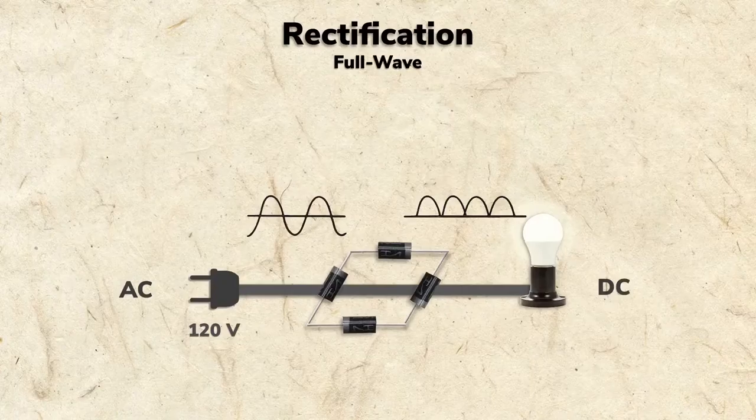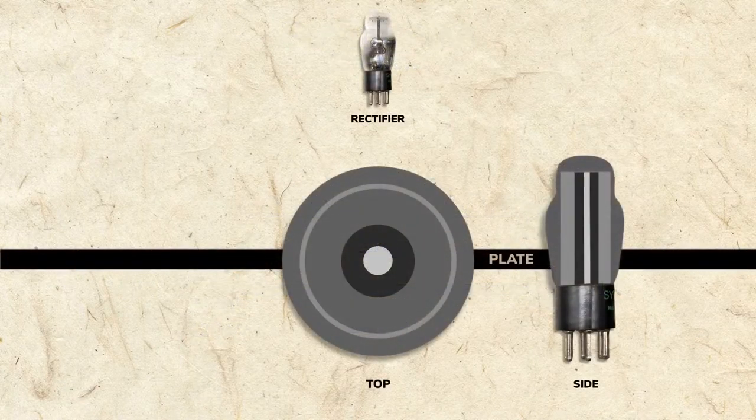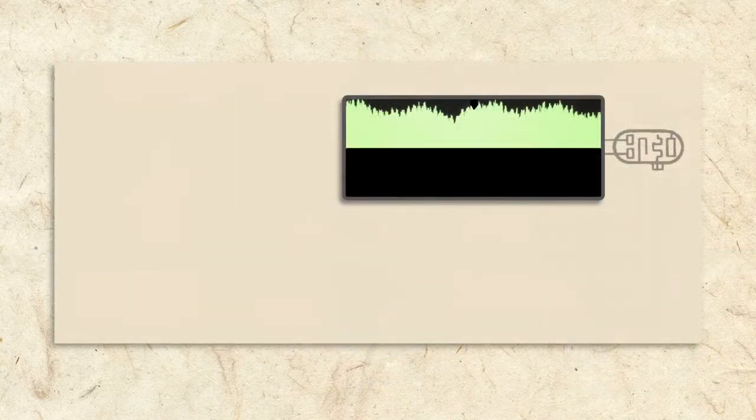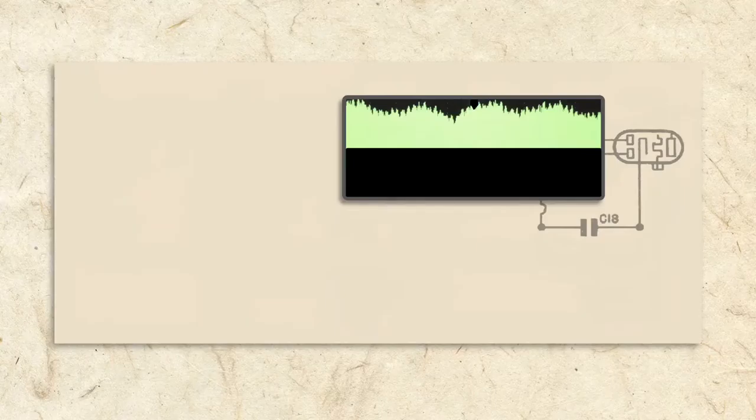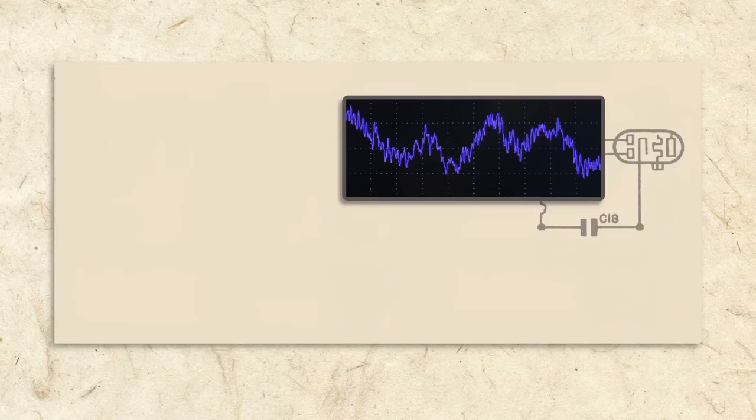For more details on how this works, please see my earlier segments on rectification and the rectifier tube. To isolate the audio from the IF, the signal passes through capacitor C18, which filters the 456 kHz carrier frequency away.